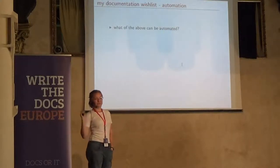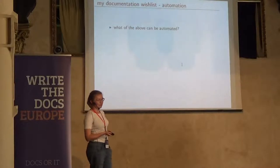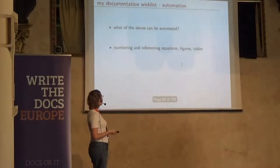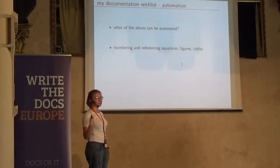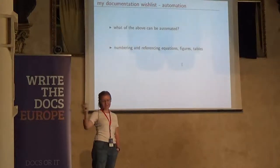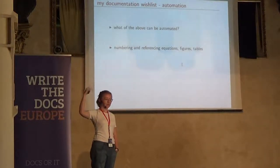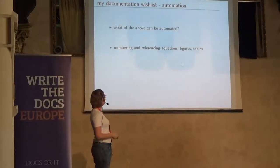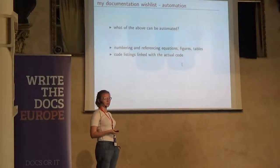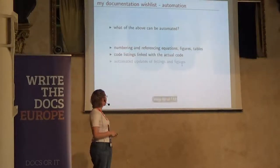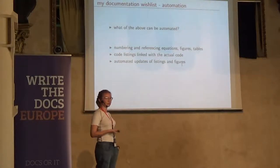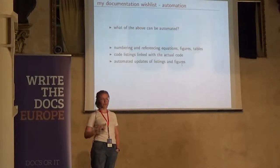I don't have to convince you that the more automated your documentation is, the better. What could we make automated? First, the numbering of equations, figures, and tables is all done automatically, so if I insert an equation at the beginning of my documentation, all the references are updated for me. The code listings I want linked with the actual code so they update automatically. And the figures — as those are the results of my model — I also want them updated automatically whenever the code changes.